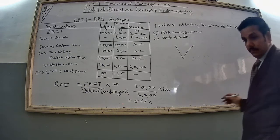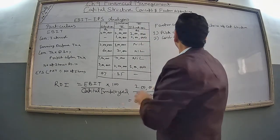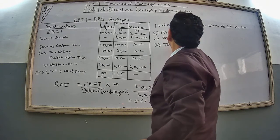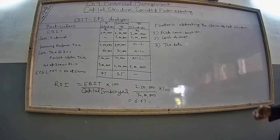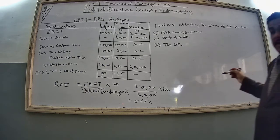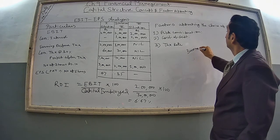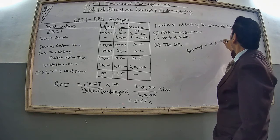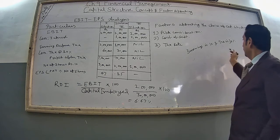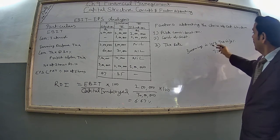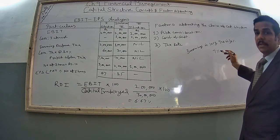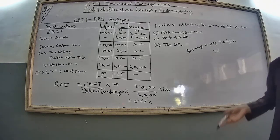Third point is tax rate. Since interest on debt is a deductible expense, the cost of debt is affected by tax rate. A higher tax rate makes debt relatively cheaper, hence more debt can be used. For example, if borrowing rate is 10% and tax rate is 30%, then 30% of 10 is 3, so your effective borrowing cost comes to only 7%. This is because tax is applicable after deducting the interest, reducing your actual cost of debt.